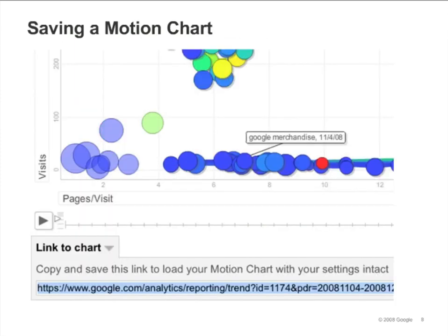You can save the settings of any motion chart so that you can access it later. To do this, click Link to Chart and copy and save the link that's provided.